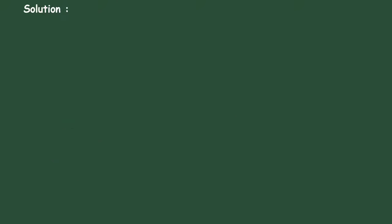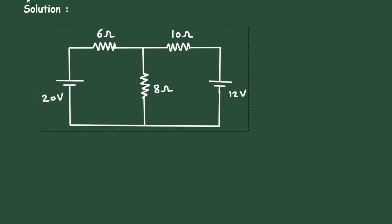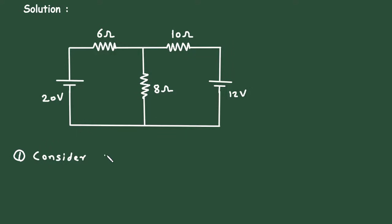Solution. First of all, here we can see in this circuit there are two sources — one is this 20 volt voltage source and second is this 12 volt voltage source. So here in this circuit, we can apply superposition theorem because more than one source is present. First, we will consider this 20 volt voltage source and turn off this 12 volt voltage source. After that, we will consider this 12 volt voltage source and turn off this 20 volt voltage source. So step one is to consider the 20 volt voltage source and turn off all other sources.